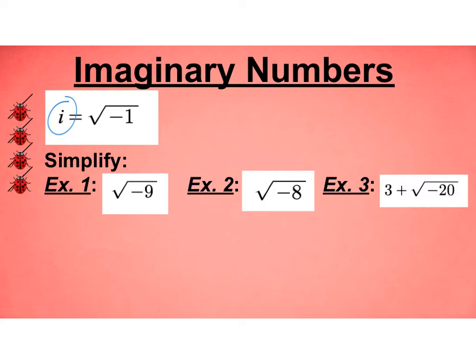This is going to help us when we're simplifying. In example 1, if I have √(-9), I can break that up so it's √(-1) × 9. The square root of -1 is i, and the square root of 9 is 3, and we usually put the number in front of the i. Make sure you're not putting a plus or minus there. It's just simply positive 3i.